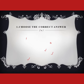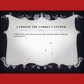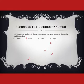Question number one — choose the correct answer: Which organ works with the nervous system and sense organs to detect the world around us? We have four options: lung, liver, heart. Lungs are a respiratory organ, liver is for digestion, heart is a pumping organ. So our correct answer is the brain, which works with the nervous system. The nervous system has two organs: brain and spinal cord.